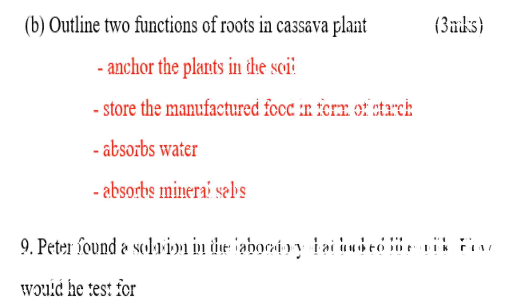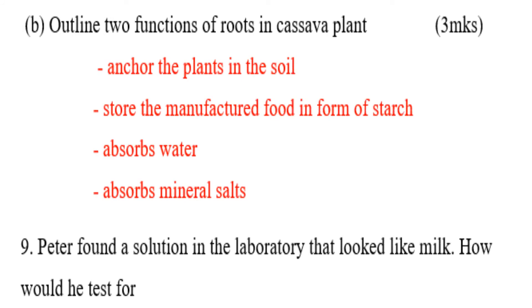Question: Outline two functions of roots in the cassava plant. Number one, to anchor the plant in the soil. Number two, to store manufactured food in the form of starch. Additionally, roots absorb water and absorb mineral salts.